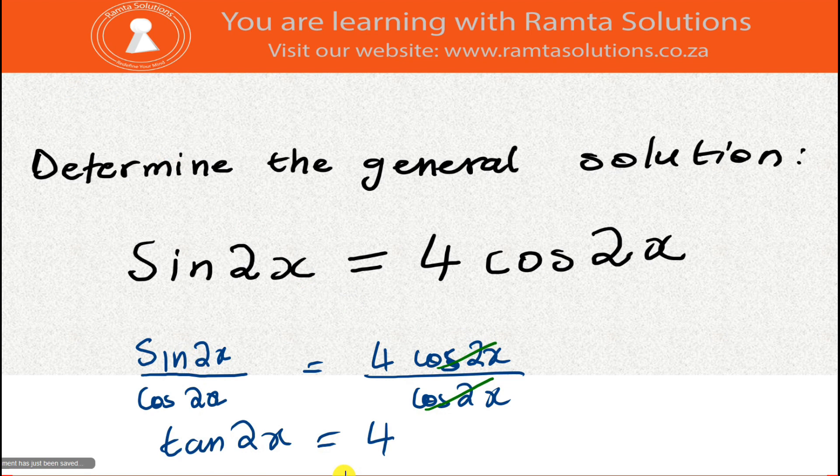Proceeding, you'll now find your reference angle. Your reference angle equals tan inverse of 4. Using your calculator, shift tan, then tan inverse of 4, you get 75.96 degrees. That's our reference angle.